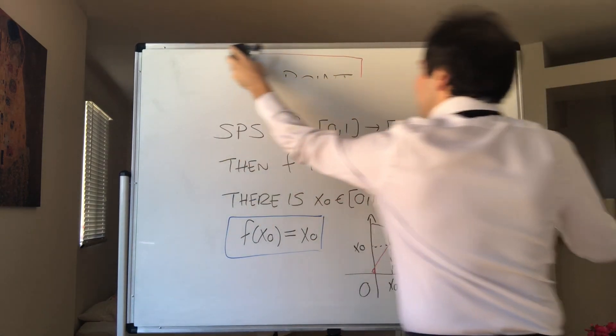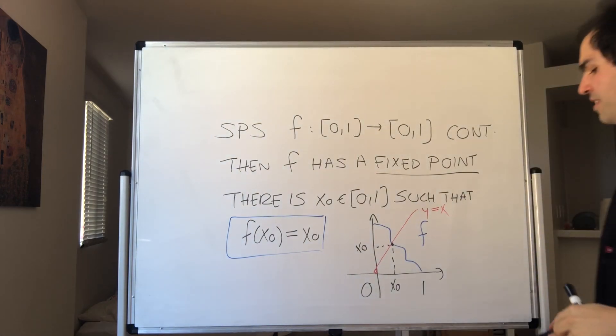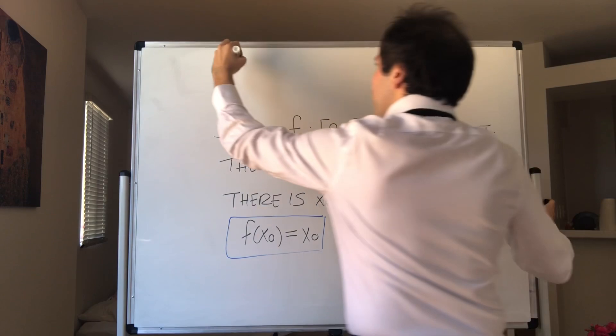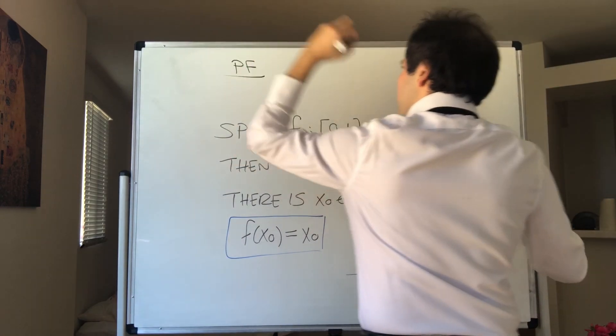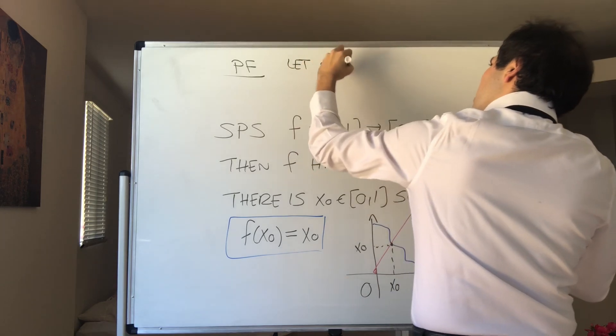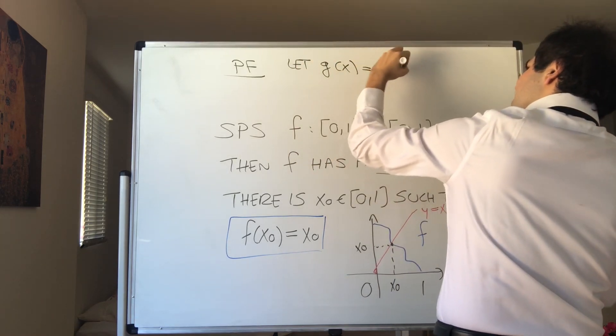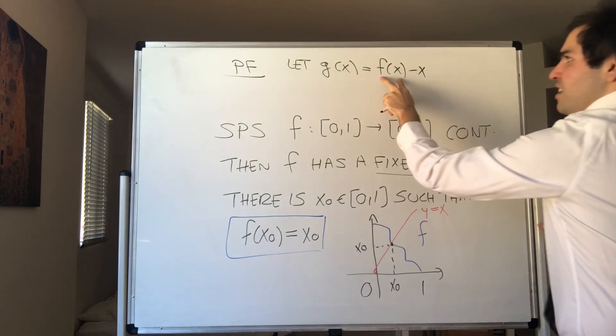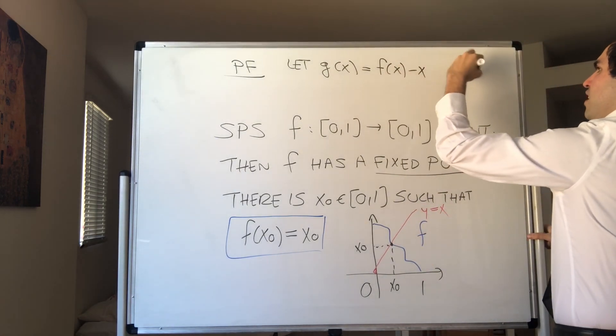So as I said, it is a nice application of the intermediate value theorem. So proof: let g(x) be f(x) minus x. All right, since f is continuous, well, g must be continuous as well.